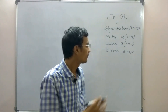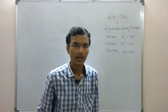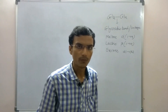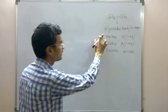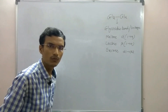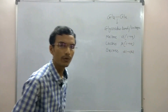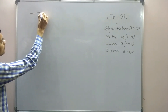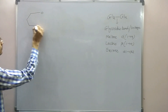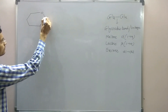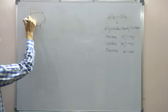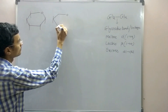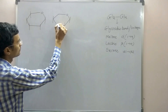Now I will draw the structures of these disaccharides and show how these glycosidic bonds are formed. First is maltose, which is made up of two molecules of glucose joined with an alpha-1-4 bond. This is the structure of maltose.